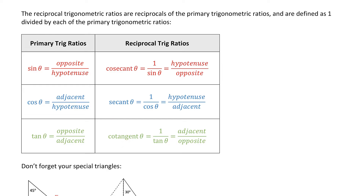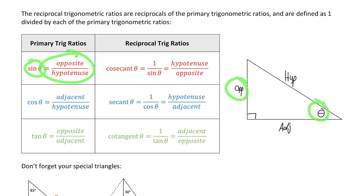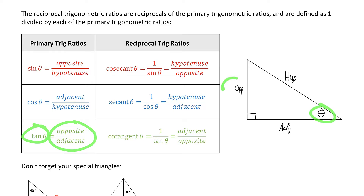Before I explain them, it'll help if I draw a right angle triangle with a reference angle theta. A quick reminder of the primary trig ratios — sine, cosine, and tangent. They take an angle as an input, and what they output is a ratio of sides in the triangle. Sine of theta equals opposite over hypotenuse. Cosine of theta equals adjacent over hypotenuse. Tan of theta equals opposite over adjacent. The acronym SOHCAHTOA can help you remember those ratios.